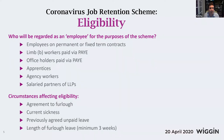If unpaid leave was agreed after the 28th of February, you can backdate the furlough claim, presumably because any unpaid leave agreed after that date is more likely to be COVID-19 related. Finally, it's very clear that you can only make a claim if someone is placed on furlough for a minimum of three weeks — furloughing for one or two weeks is not sufficient, otherwise the claim will fail.